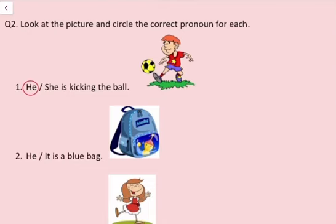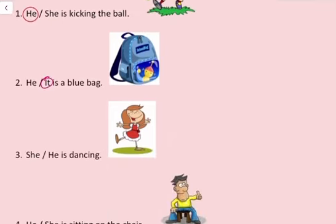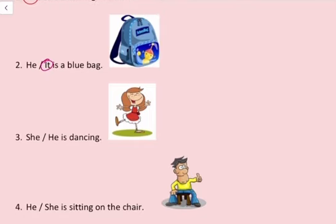Second, he or it is a blue bag. Bag ek non living thing hai, is ke liye hum it use karenge. Number 3. She or he is dancing. Picture me jo dance kar raha hai, vah girl hai, us ke liye hum she use karenge. She is dancing.